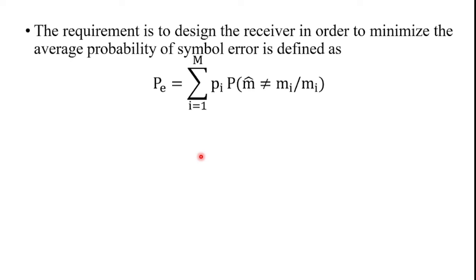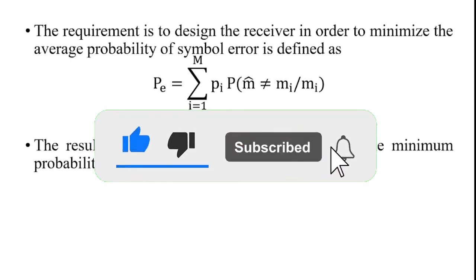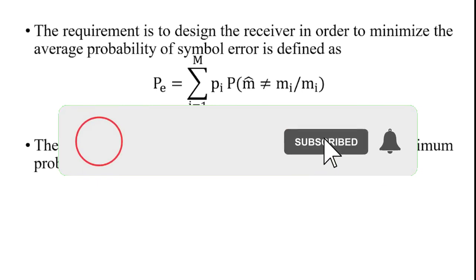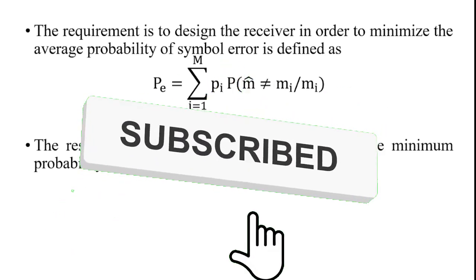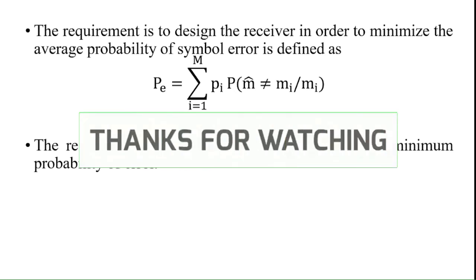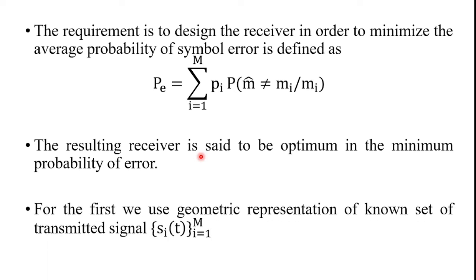The resulting receiver is said to be optimum in the minimum probability of error. To achieve this, we use the geometric representation of the known set of transmitted signals si(t), for i equal to 1 to M. This is the introduction to signal space analysis.